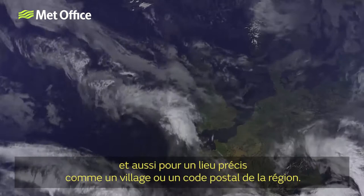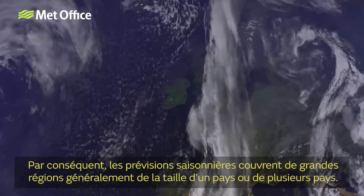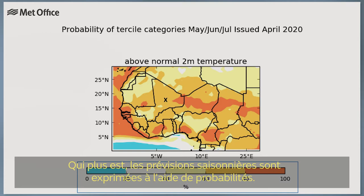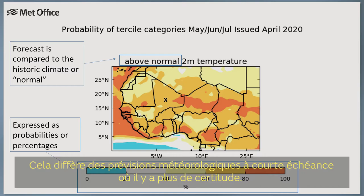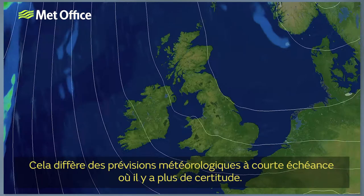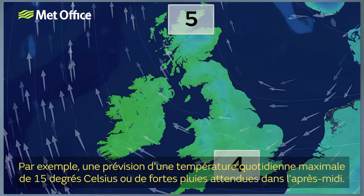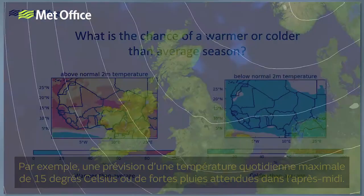Therefore, seasonal forecasts are predictions for a large spatial area, typically an area covering the size of a country or several countries. Seasonal forecasts are expressed using probabilities — typically the probability of how the next season will compare to average or normal conditions for that season. This contrasts with short-range weather forecasts where there's more certainty and often only the most likely outcome is given, such as forecasting a maximum daily temperature of 15 degrees Celsius or heavy rainfall expected in the afternoon.